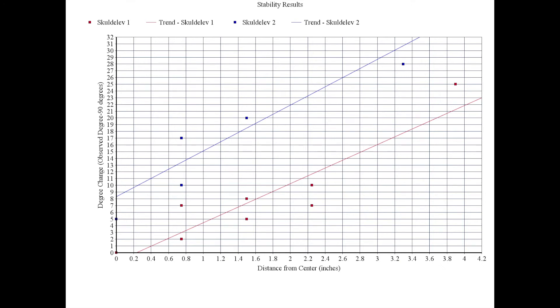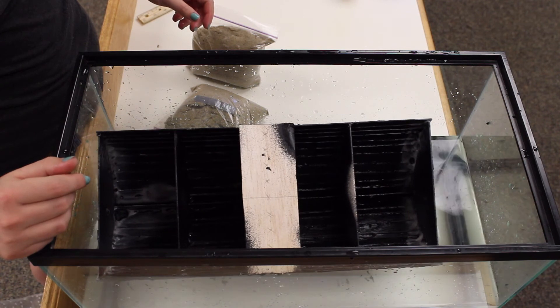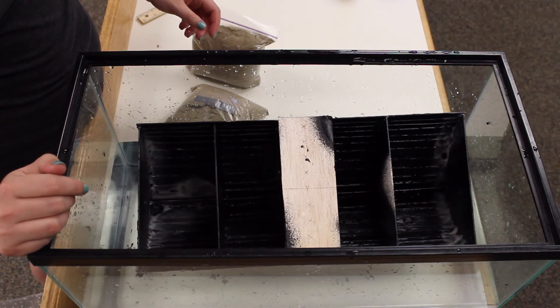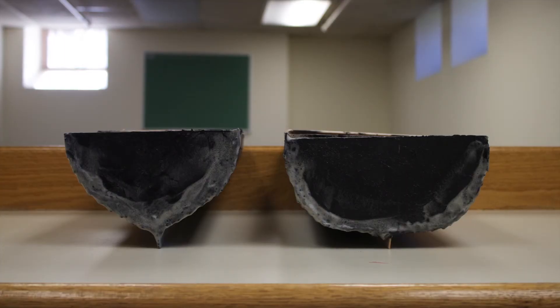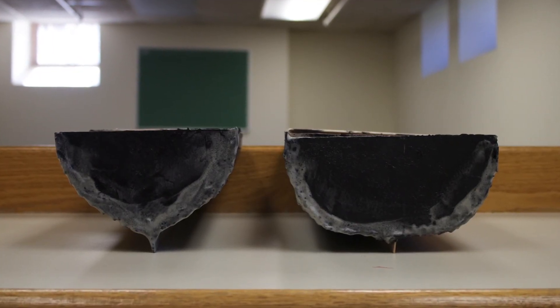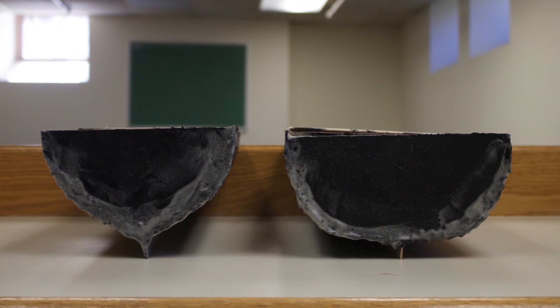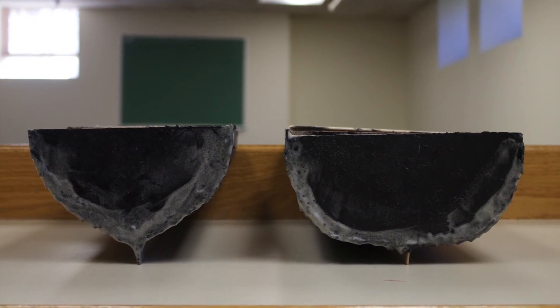Based on our numerical data, as well as our general difficulty stabilizing our Skuldelev 2 model prior to testing, it would appear that our hypothesis is correct. The hull of the knarr with its wider and more rectangular shape is more stable than the narrower and more triangular longboat hull.